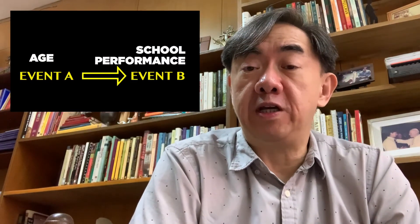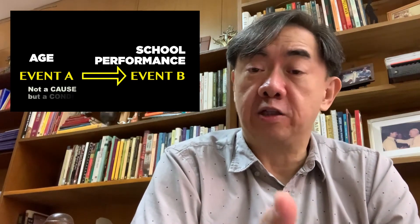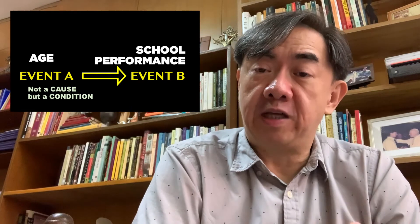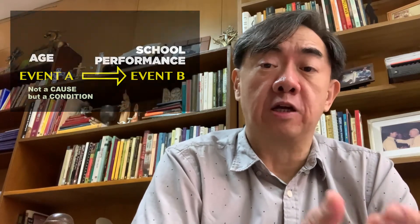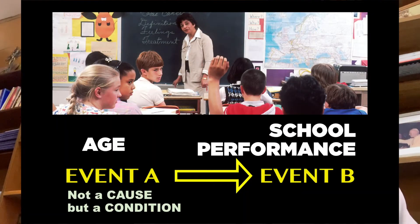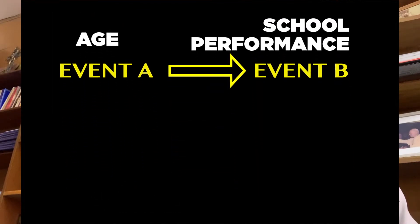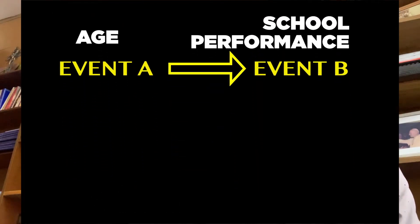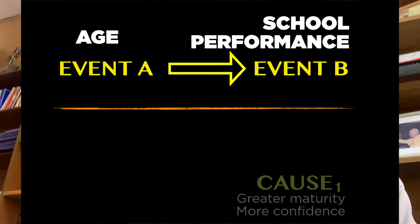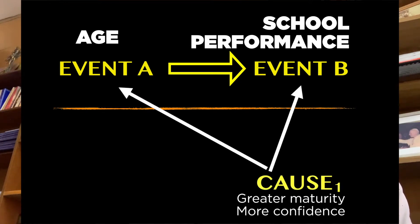The reason is we know that events are not causes, but conditions. So in this case, age is not a cause that leads to better school performance, but merely a condition. So the critical realist researcher would ask himself or herself: what could be the underlying causes that are triggered by age? One possible answer is that as a student gets older, he or she becomes more mature and gains greater self-confidence, thereby leading to better school performance.